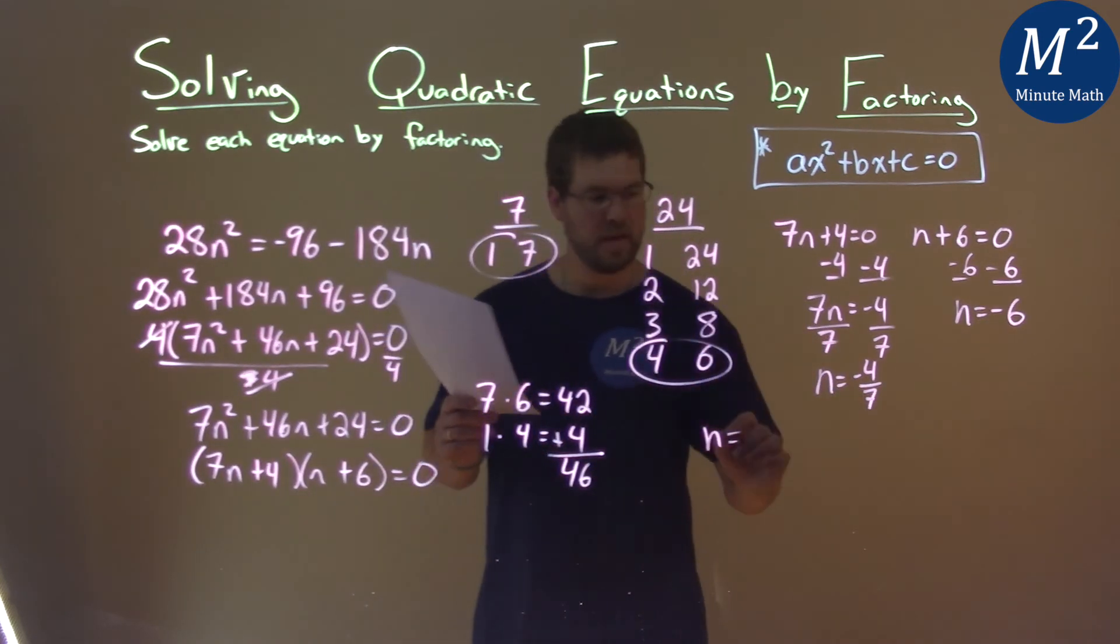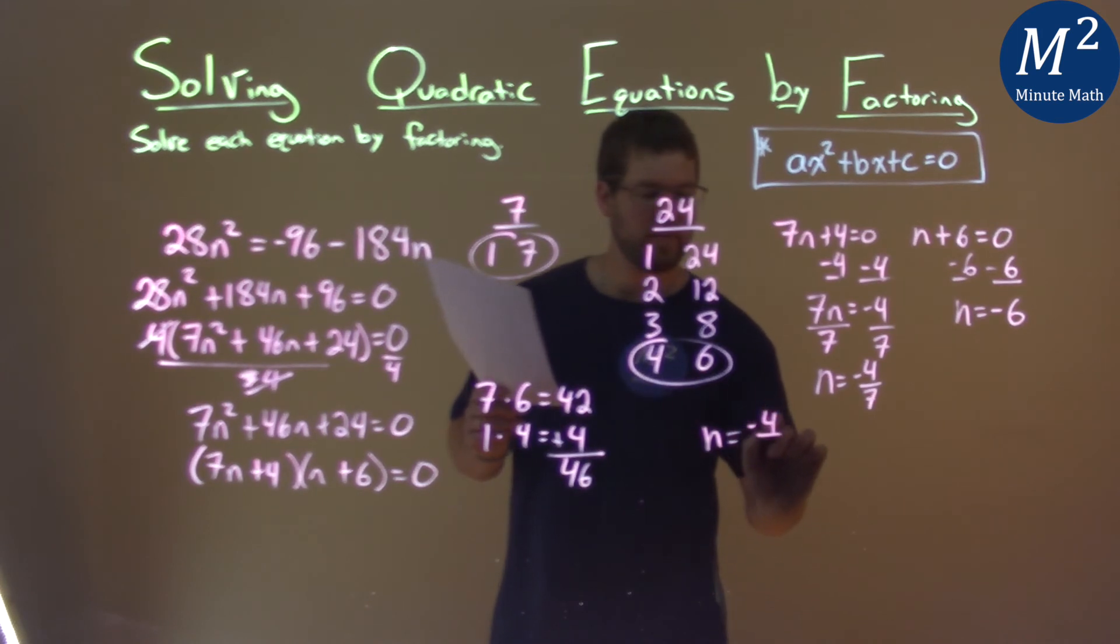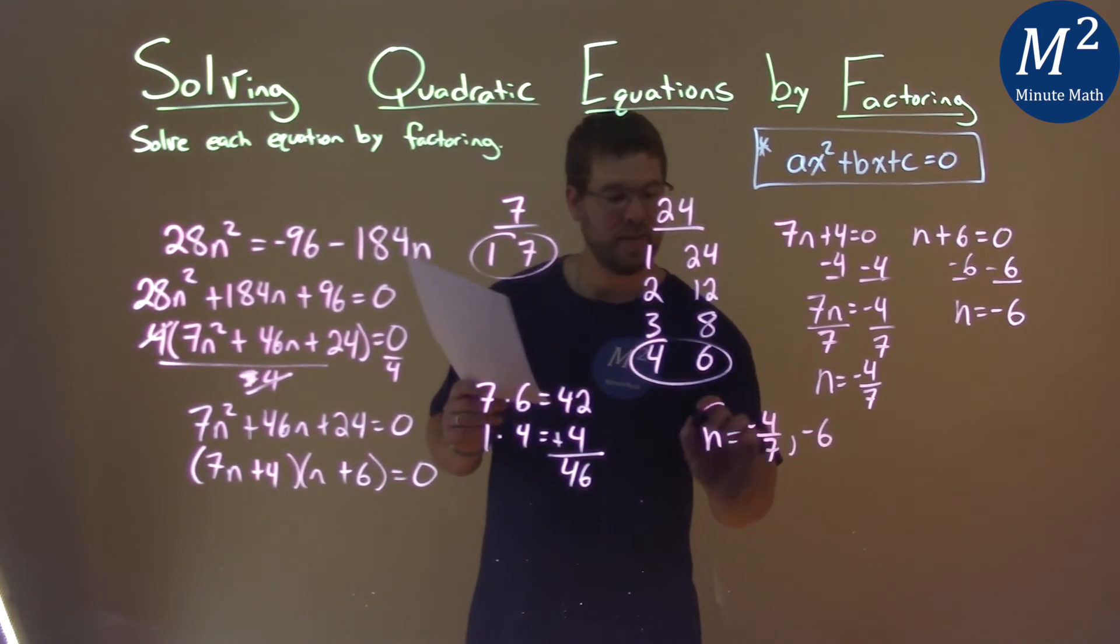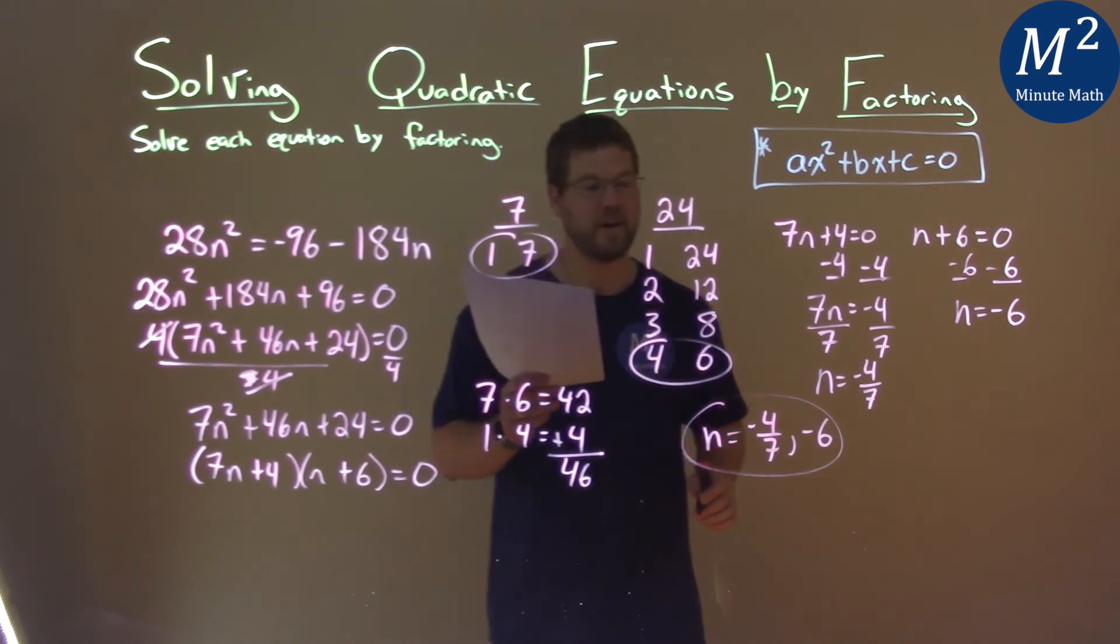We can write it as one statement. So n equals negative four sevenths and negative six, and that is my final answer.